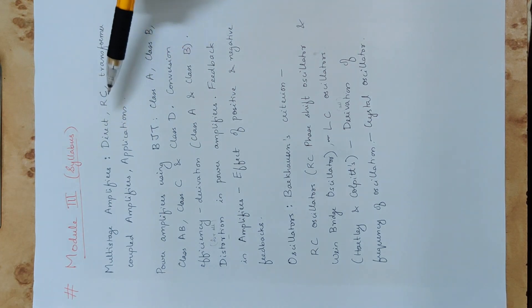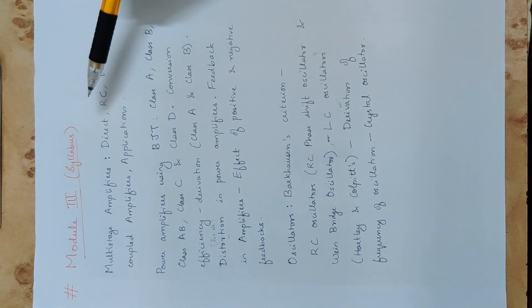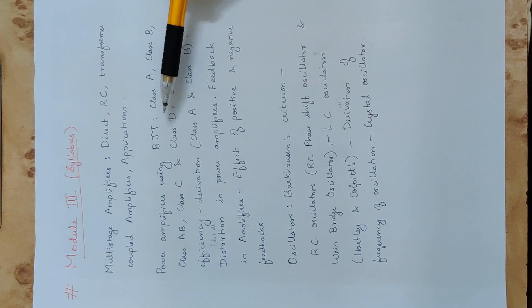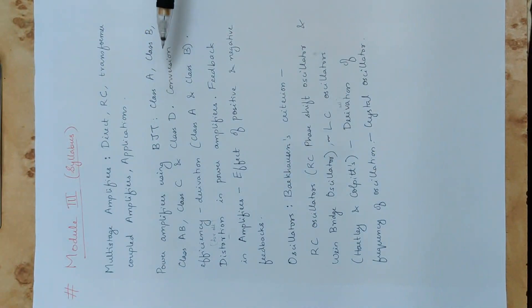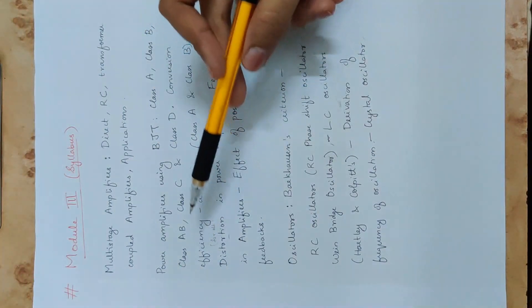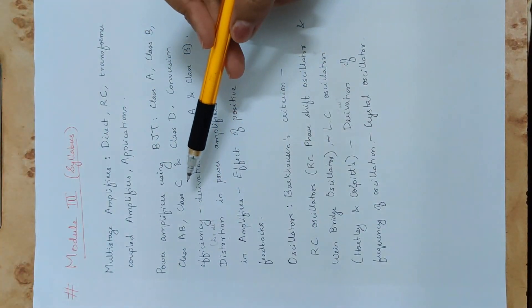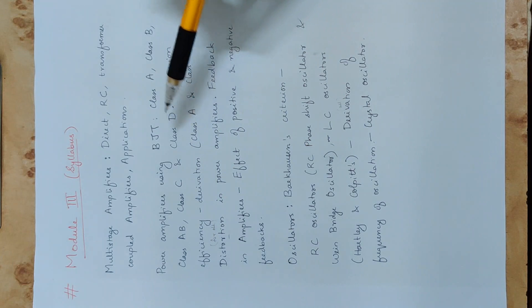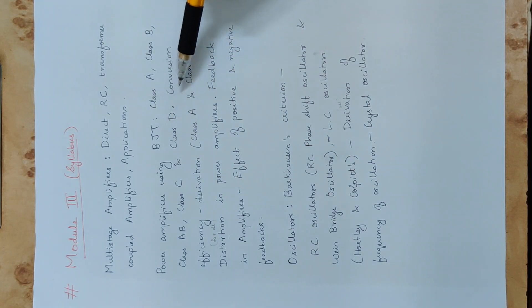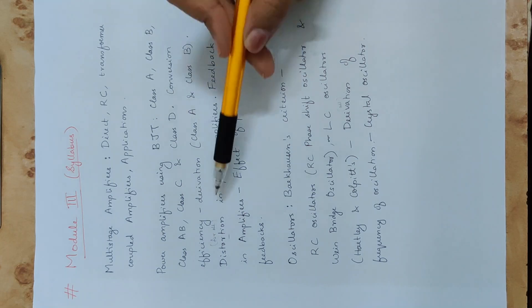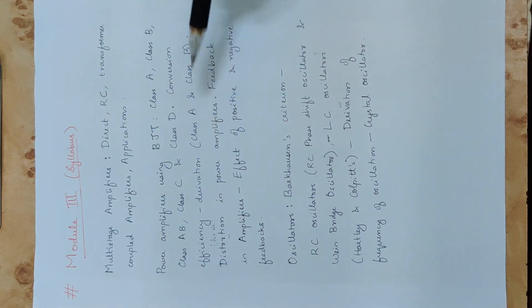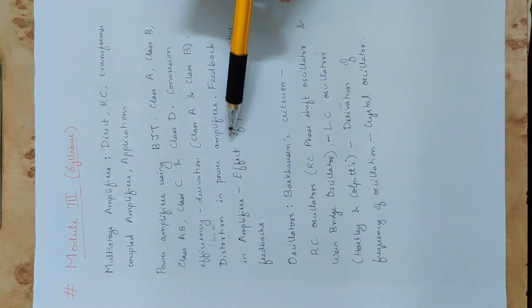We will use multi-stage amplifiers in applications. Next, we cover power amplifiers using BJT. There are different types: Class A, Class B, Class AB, Class C, and Class D. We will learn about each type and study conversion efficiency — including the derivation for Class A and Class B — as well as distortion in power amplifiers.